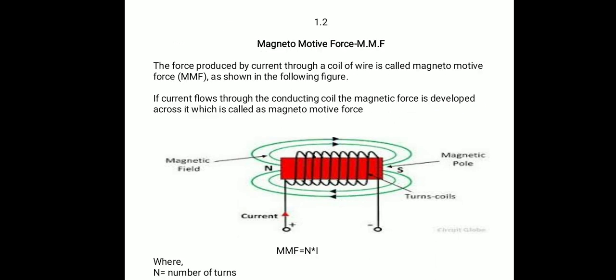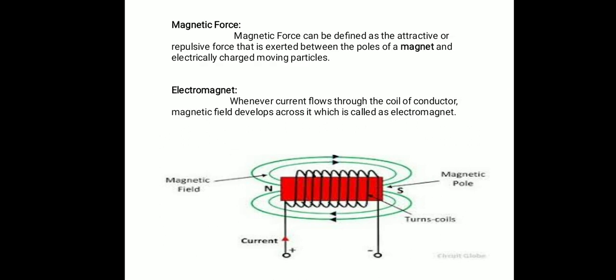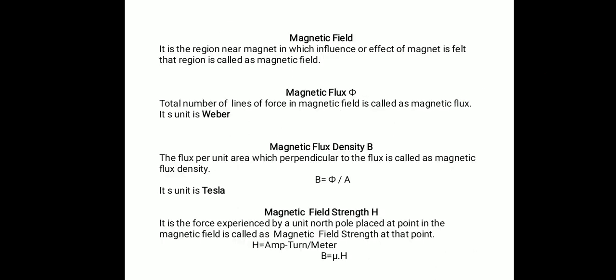The setup shown in the diagram is called the electromagnet. There is one coil, and if the current flows through that coil, magnetic flux develops across that coil, which is called the magnetomotive force. That setup is called the electromagnet. Whenever current flows through the coil of conductor, a magnetic field develops across it, which is called the electromagnet.